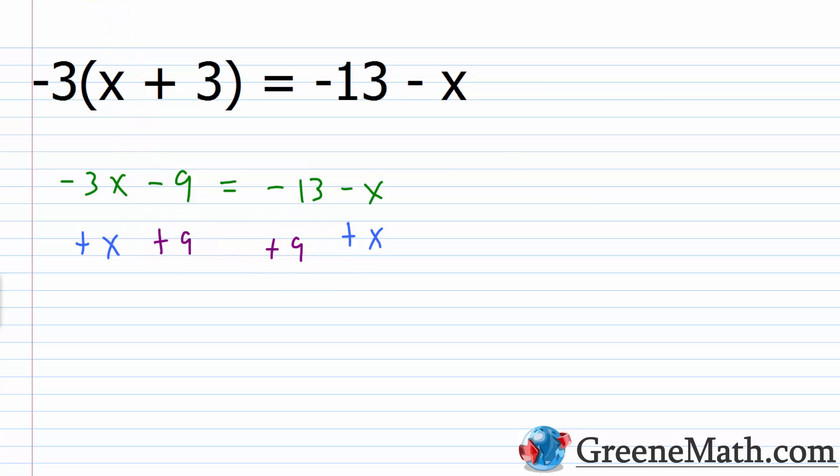So what's going to happen is this is going to cancel and this is going to cancel. -3x + x is -2x. This is equal to -13 + 9 is -4. So -2x = -4. I can solve that by just dividing both sides of the equation by -2, and I get that x = 2.